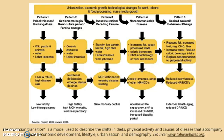Pattern five tends to occur in high-income countries with high education and health awareness — it's the stage of desired societal and behavioral change. Here you see reduced fat, increased fruit and vegetable intake, increased CHO (carbohydrates) and fiber, reduced caloric beverage intake, and replacement of sedentarianism with purposeful activity. This leads to reduced body fatness, reduced non-communicable diseases, and extended healthy aging.